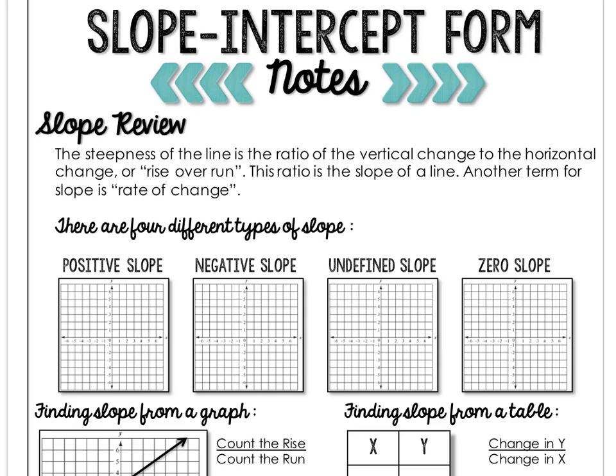Writing functions in slope-intercept form is important because we can easily get information from the equation. To start, we're going to review slope. Remember that slope is the steepness of the line — it's a ratio of the vertical change to the horizontal change, or rise over run.